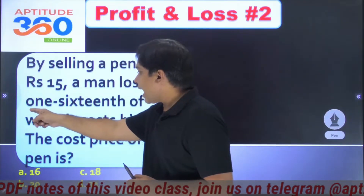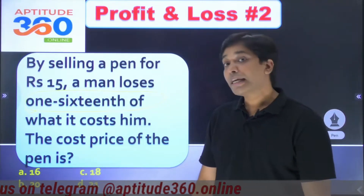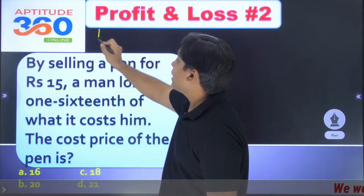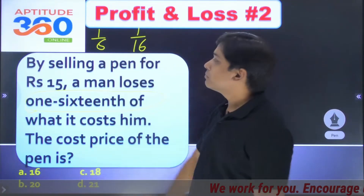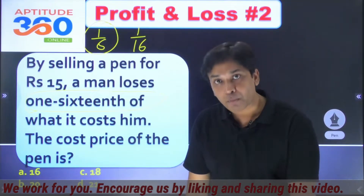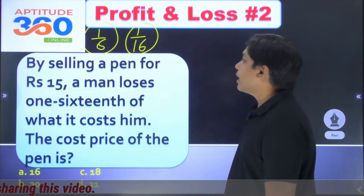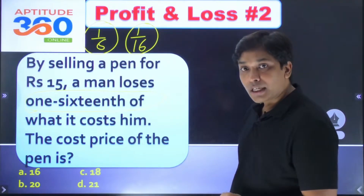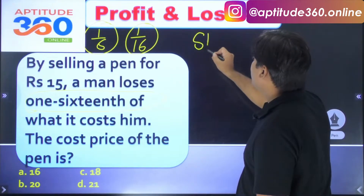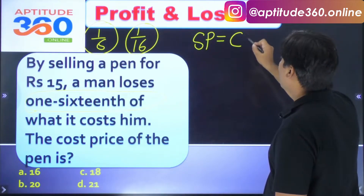Note that the loss is 1/16th, not 1/6th — majority of students will mistakenly take it as 1/6. Selling price is given as 15 rupees. Since there is a loss, cost price must be more than the selling price of 15 rupees. So: selling price equals cost price minus loss.